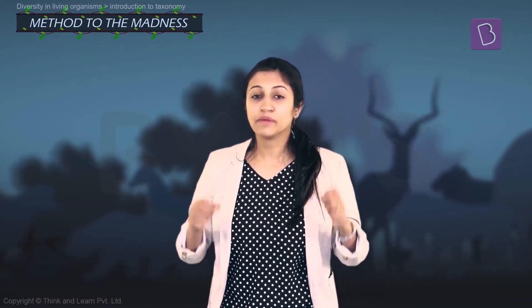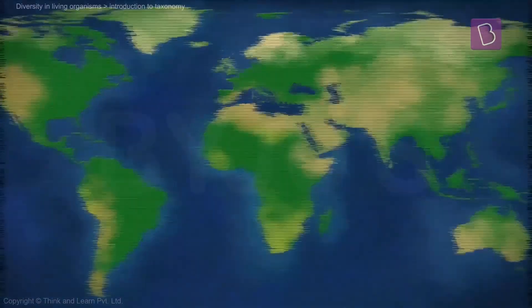So I am going to explain evolution to you with one small story so that you understand how the better species have survived over time and the others have reduced in number drastically or actually become extinct.